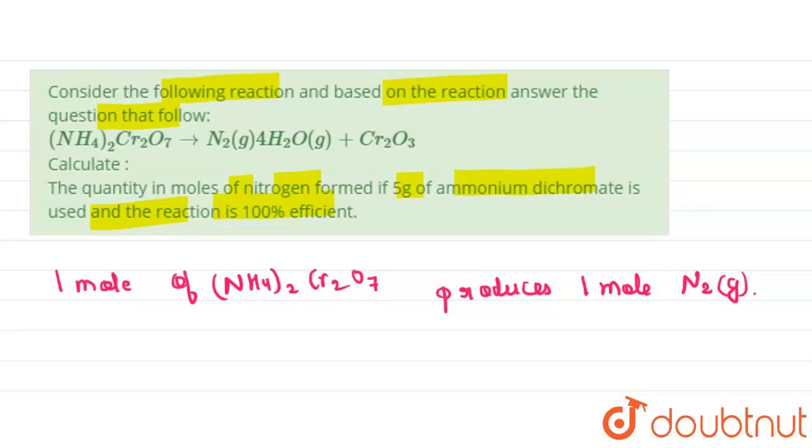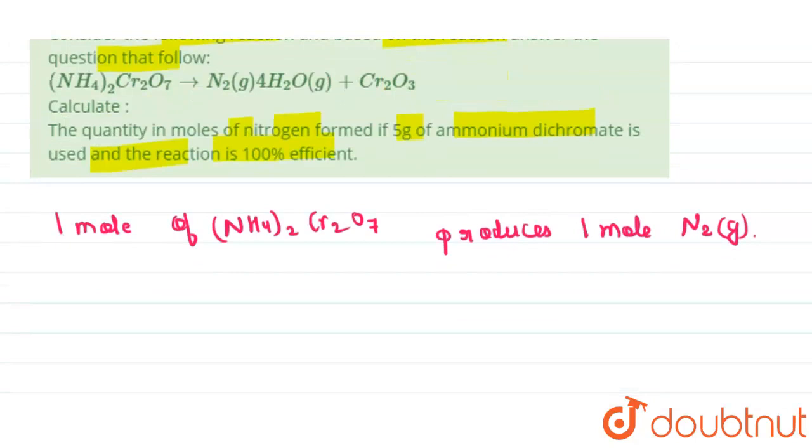So let us find the moles of ammonium dichromate. So we are given the molar mass of ammonium dichromate, which is equal to 5 grams. If we want to calculate the molar mass of ammonium dichromate...